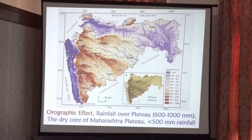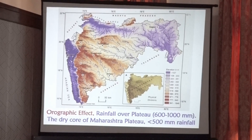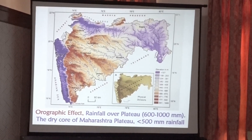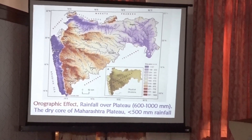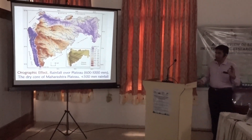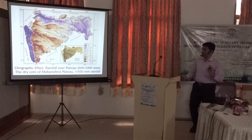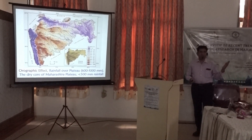Because of the orographic effect, the rainfall over the plateau ranges from 600 to 1000 millimeters — 600 millimeters mainly in the rain shadow area of Maharashtra. When we go towards the east, particularly in the Vidarbha area, the amount of rainfall increases. The dry core of the Maharashtra plateau receives rainfall of less than 500 millimeters.